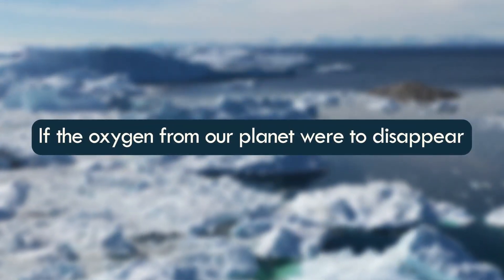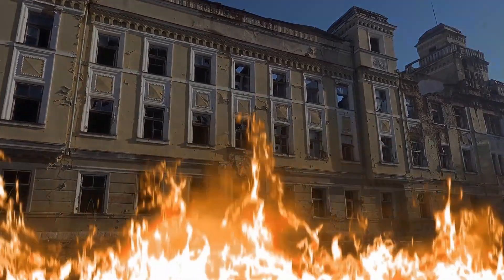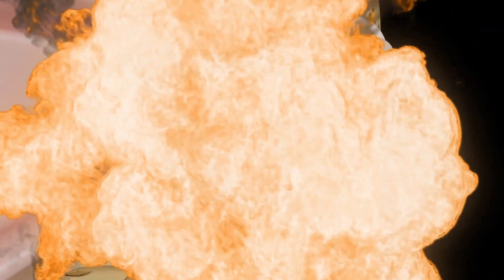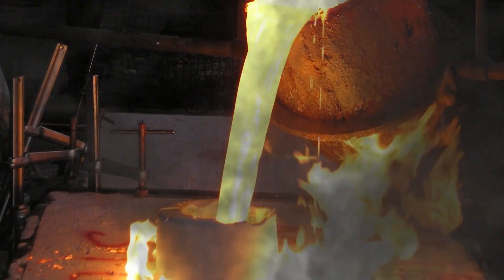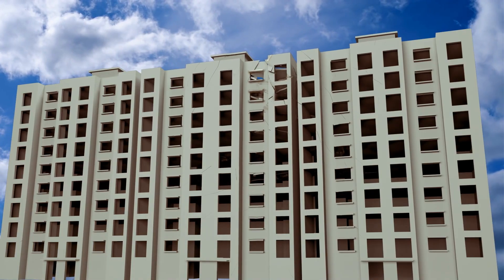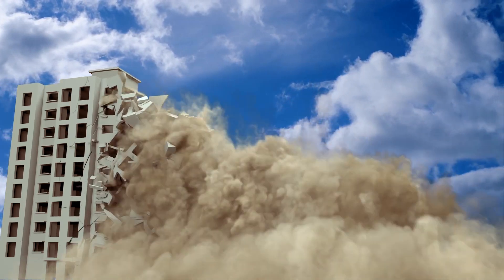If the oxygen from our planet were to disappear, all life would burn to a crisp in the scorching heat of the unshielded UV rays from the sun. Our inner ears would explode due to the change in atmospheric pressure, all metals would weld together due to an absence of oxide layers, and all concrete structures would lose their rigidity and collapse due to the lack of the oxygen molecule in CO2.